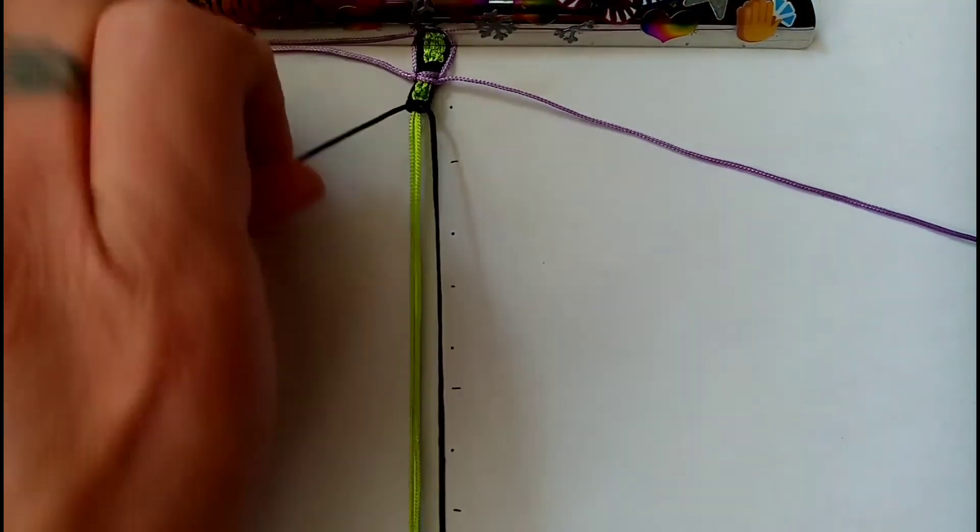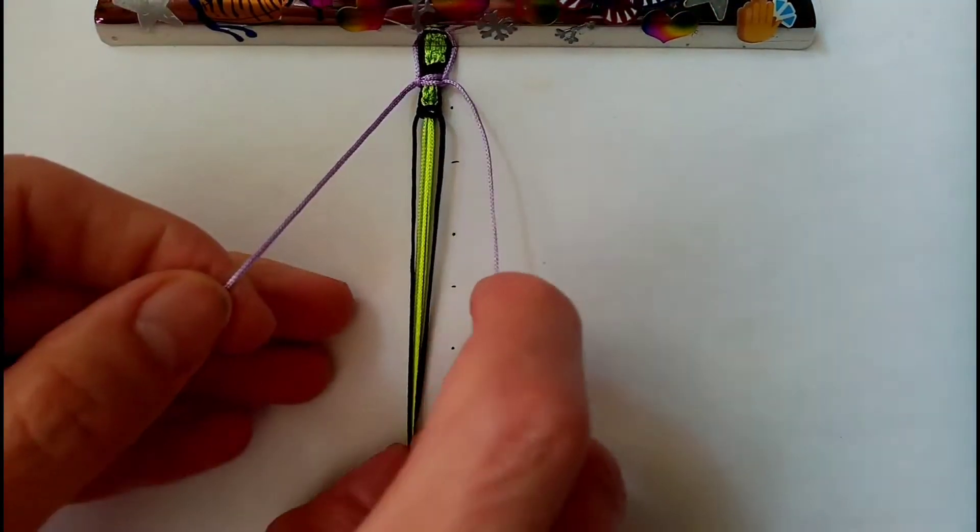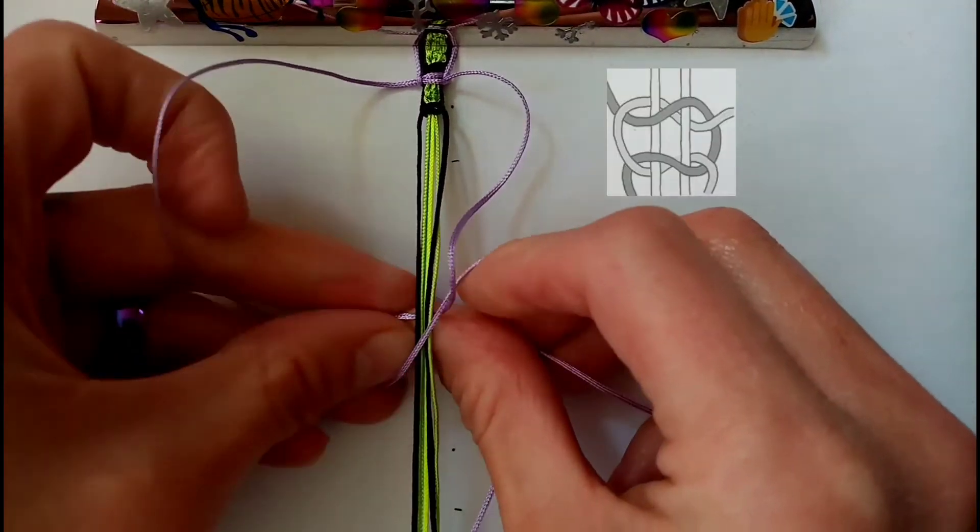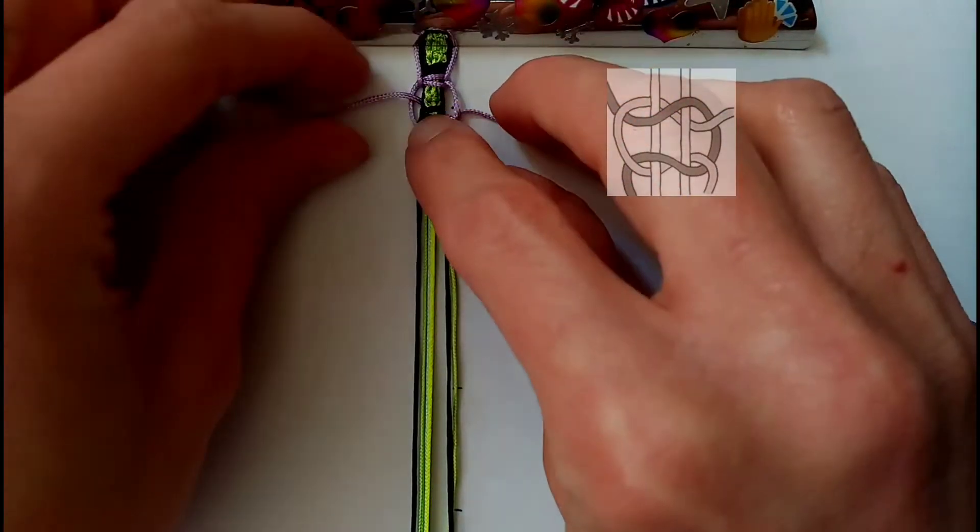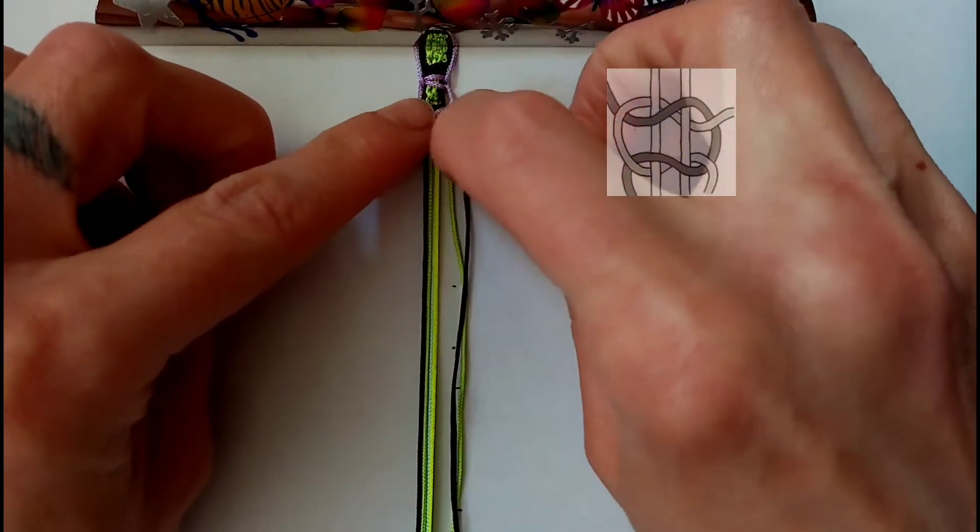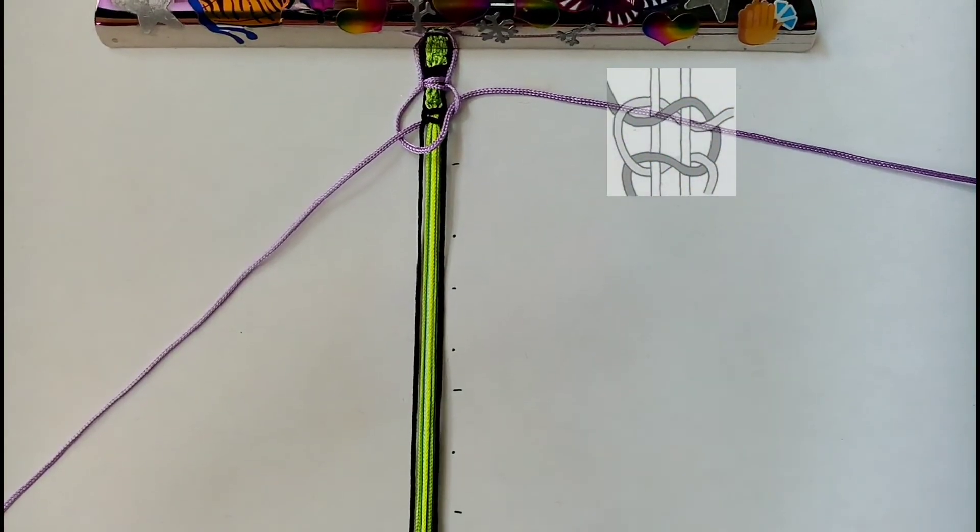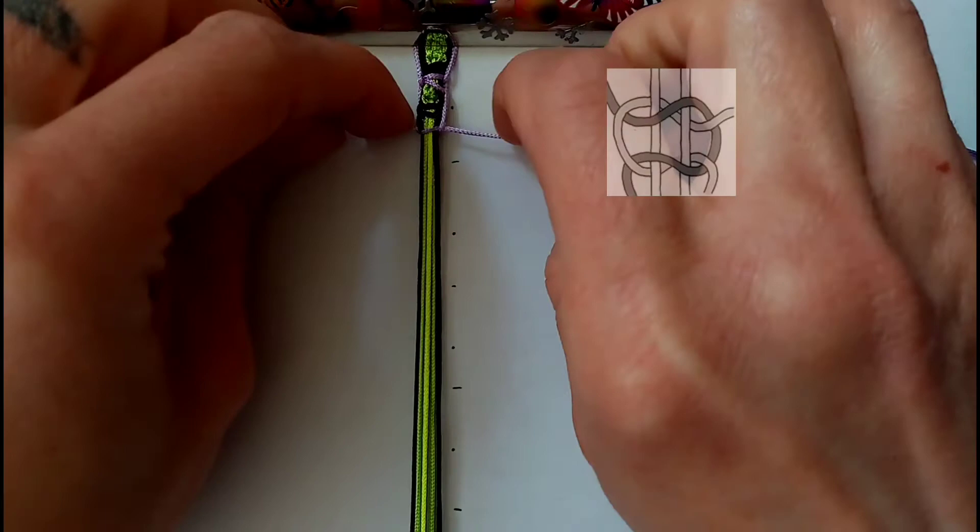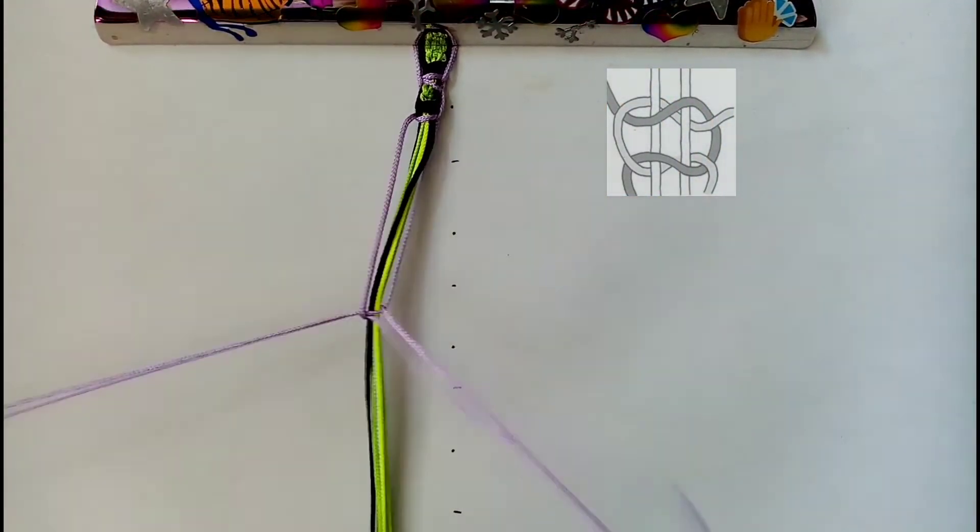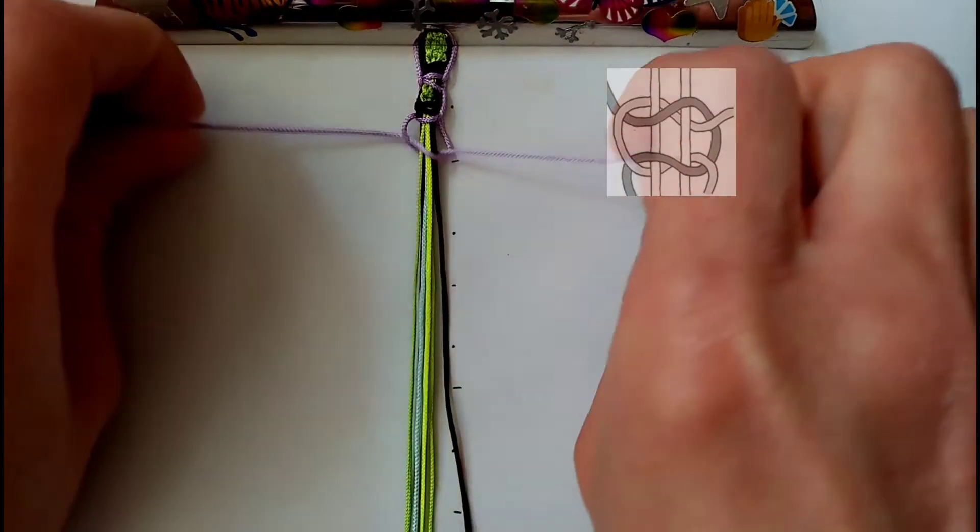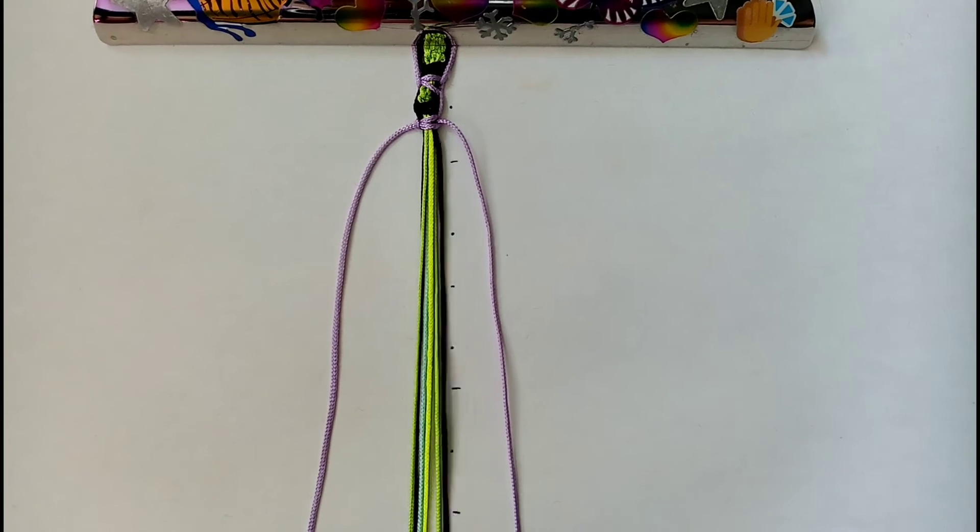And then clip these to the board as well and take the last two cords in positions 1 and 8 and do your last square knot, making sure to catch it underneath the last square knot that you did. And then back to row 1 and just keep repeating this all the way down.